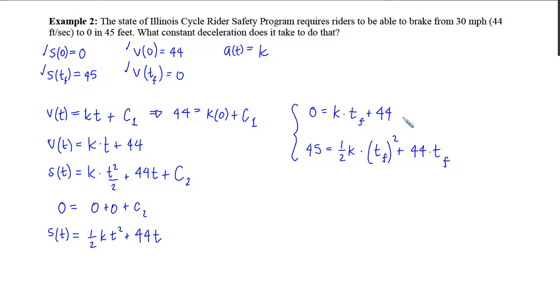And the simplest, in my opinion, is to do substitution. Since I'm interested in finding k, I would like to eliminate the t sub f. So I'm going to solve for t sub f and get negative 44 over k. So now if I plug that in here, I will get 45 equals 1 half k times that negative 44 over k quantity squared plus 44 times that negative 44 over k.